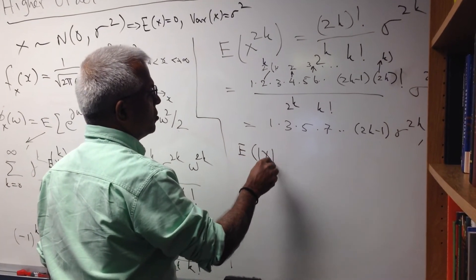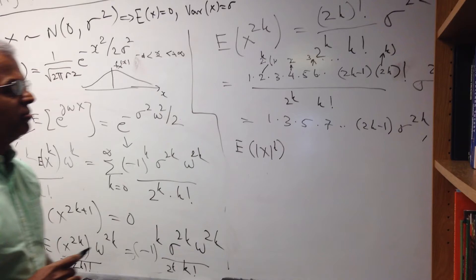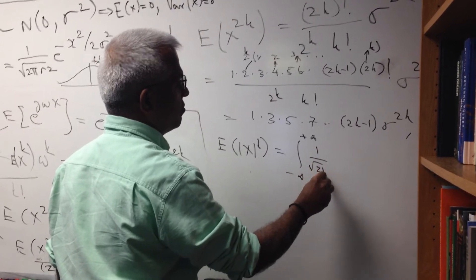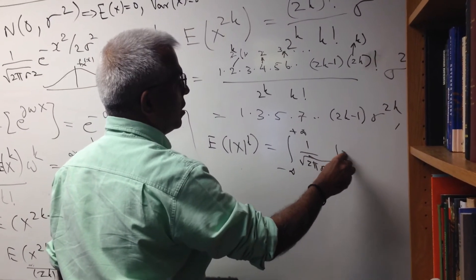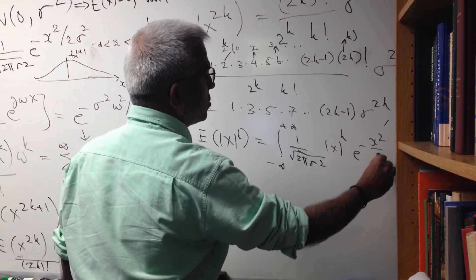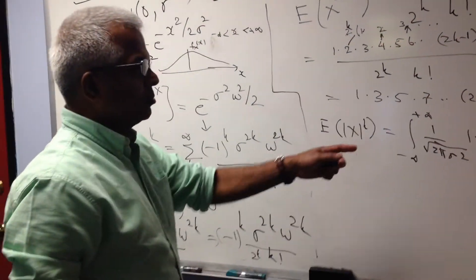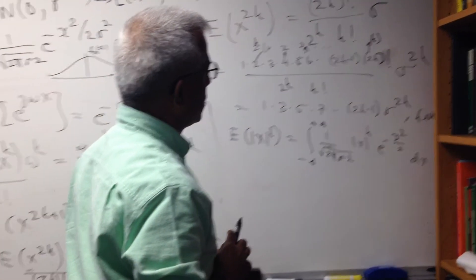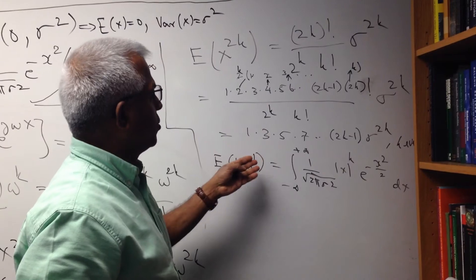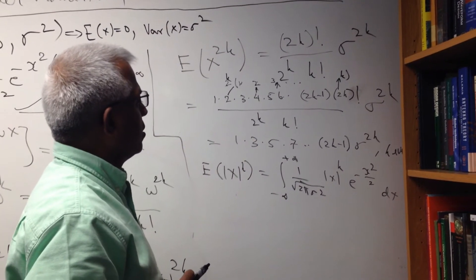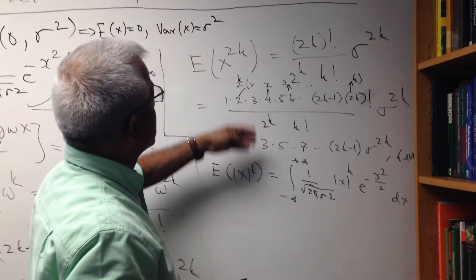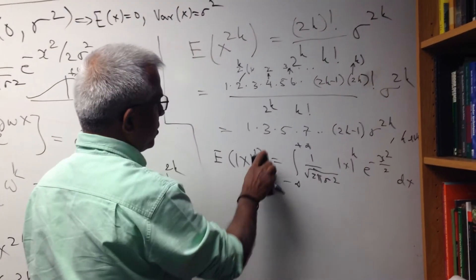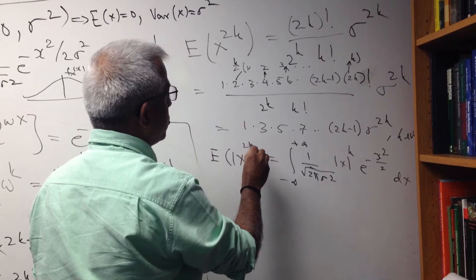To summarize: for a Gaussian random variable with zero mean and variance sigma squared, all odd-order moments are zero, and the even-order moments are given by the product 1 times 3 times 5 up to 2k minus 1, times sigma to the power 2k. We can also use this to compute the absolute moments. By definition, the absolute moment is the integral from minus infinity to plus infinity of the absolute value of x to the power k times the Gaussian density dx. When k is even, we already have the formula. We only need to figure out what happens when k is odd, i.e., k of the form 2m plus 1.